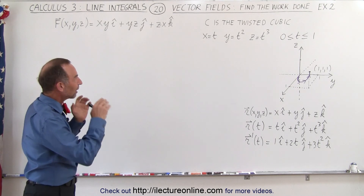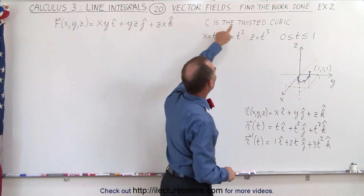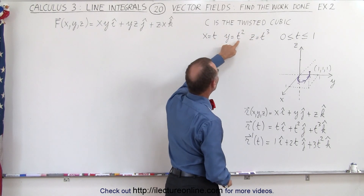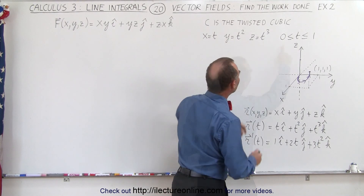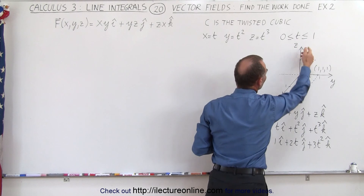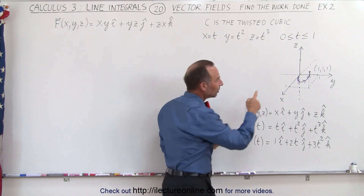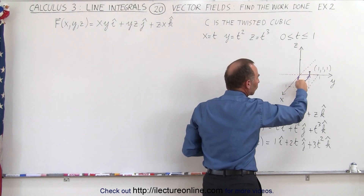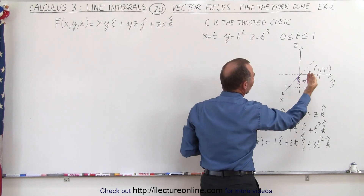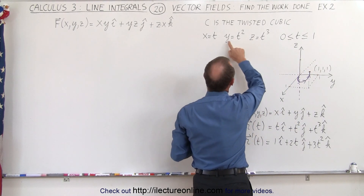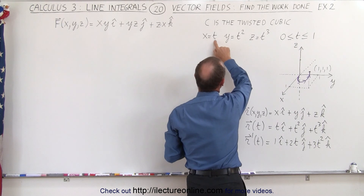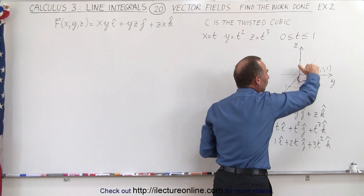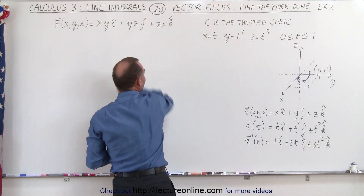We're going to integrate through that vector field over a curve that is a twisted cubic, defined by x equal to t, y equal to t squared, and z equal to t cubed, as t goes from 0 to 1. If we illustrate that here, you can see that it starts at the origin, curls up and goes to the point (1, 1, 1), since t, t squared, and t cubed all equal 1 at that endpoint. That's the curve along which we'll integrate through this vector field.